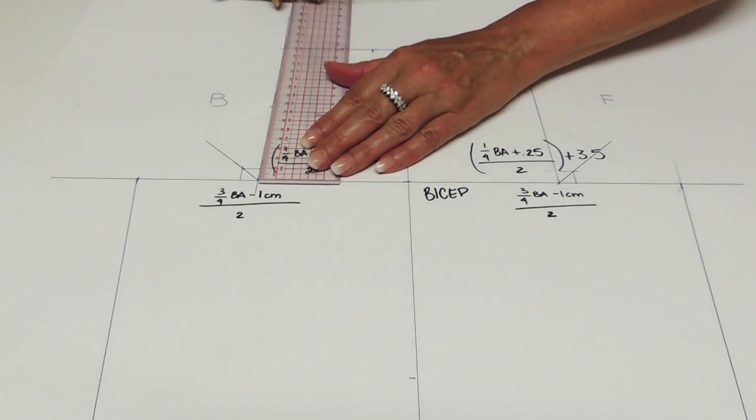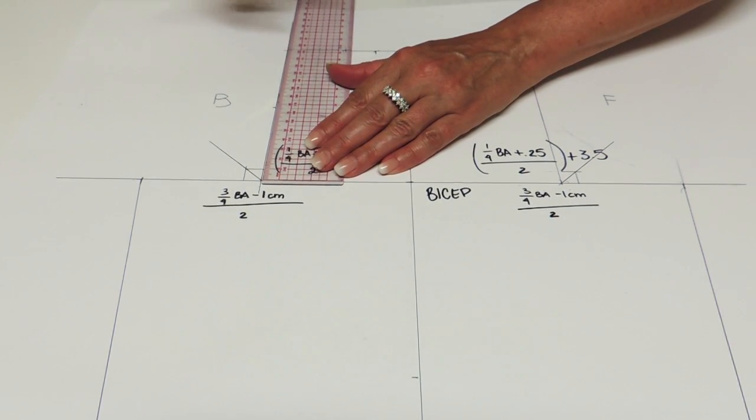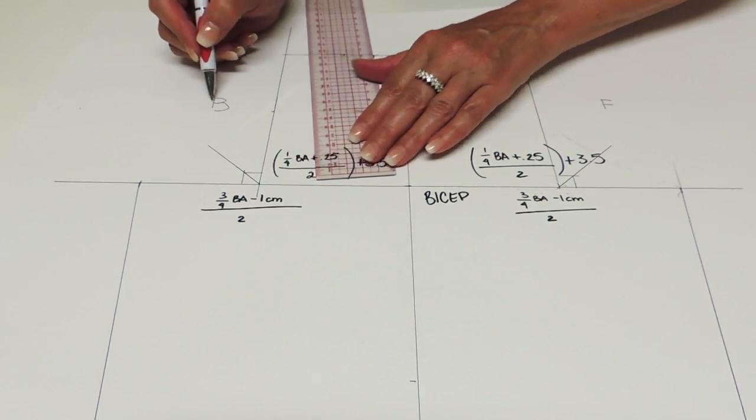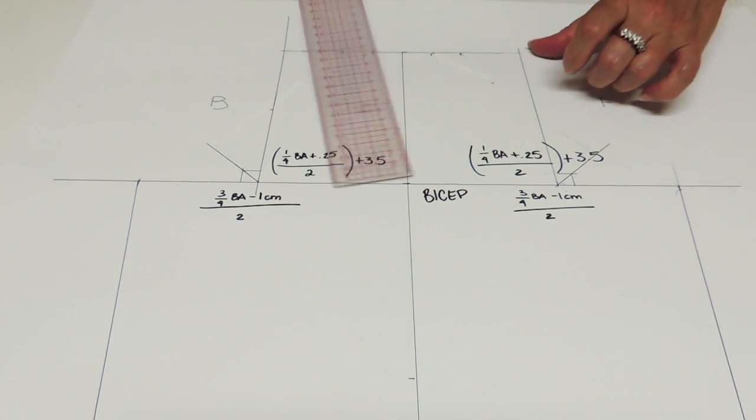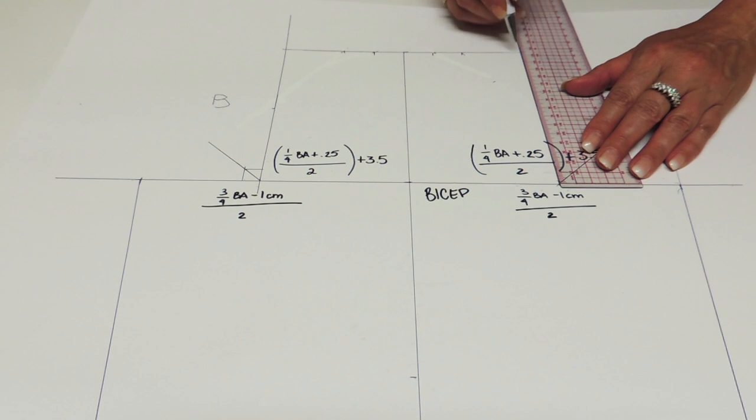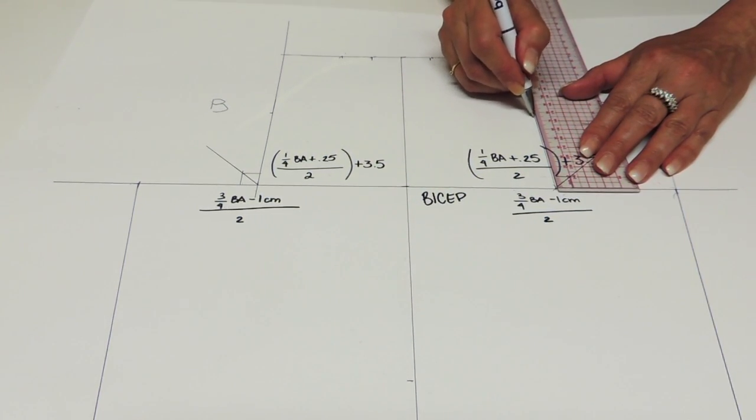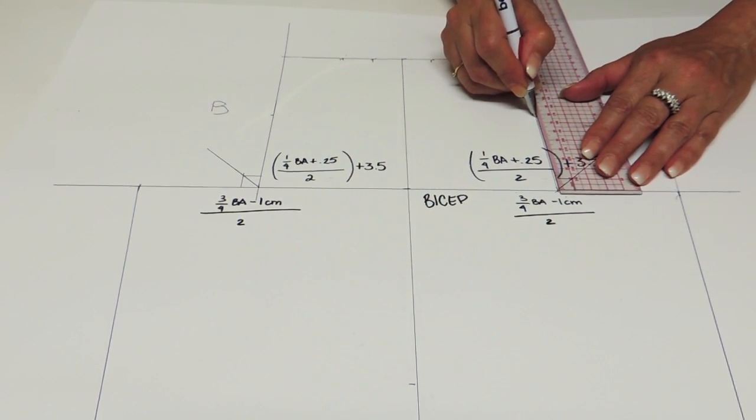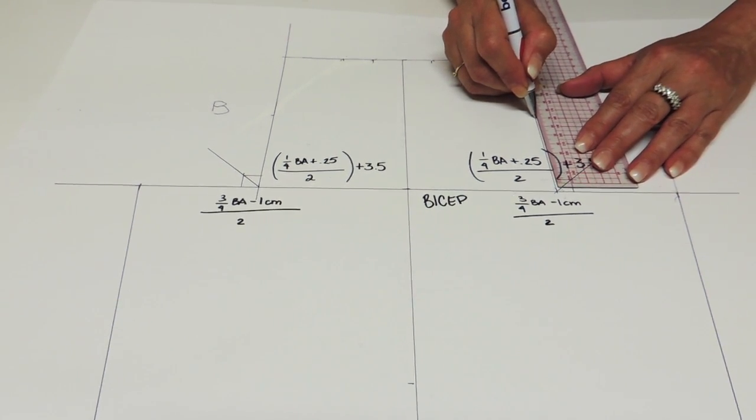Now what we're going to do, we're going to measure the sleeve head and divide it by two for the back and we're going to do the same thing in the front. So divide it by two, but go down 1cm.